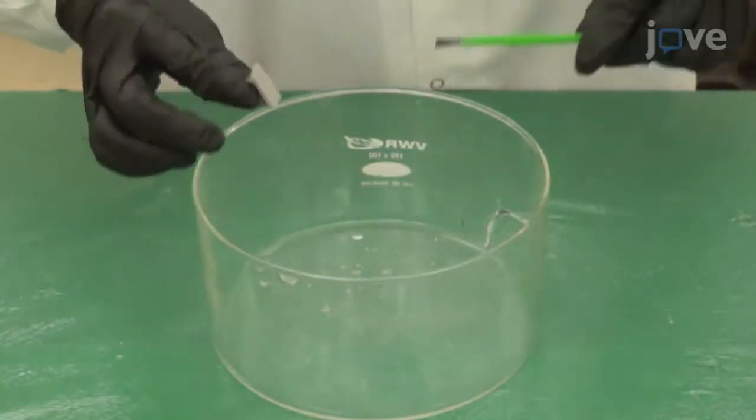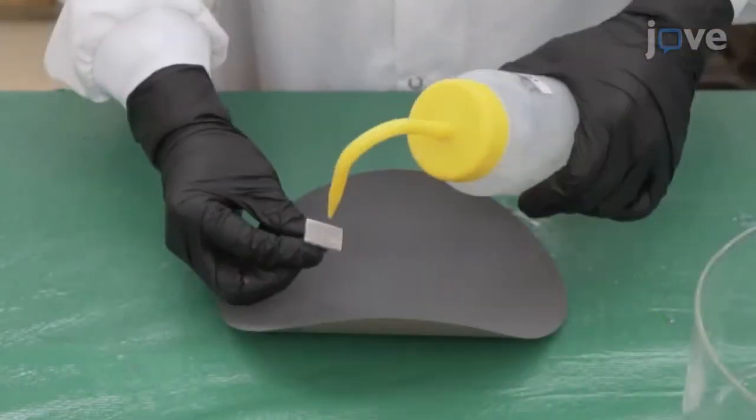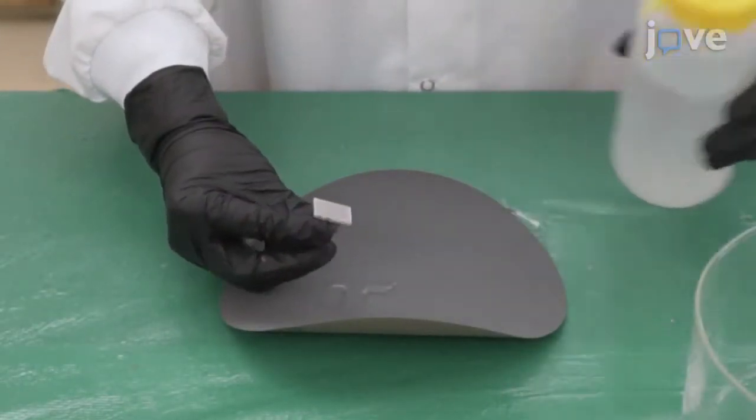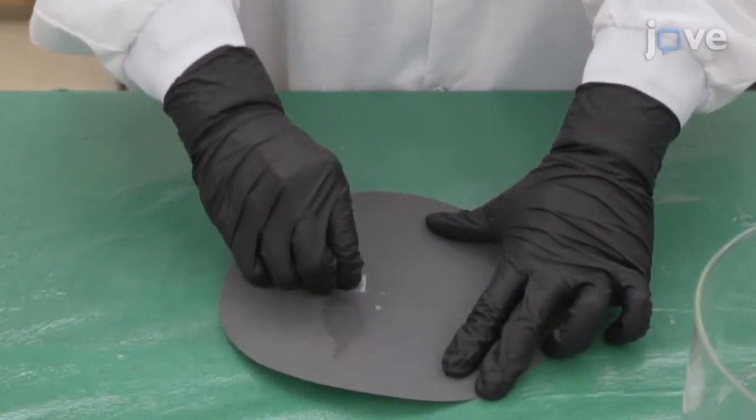Then use a soft brush and running water to clean the sample surface. Rotate and scratch the sample as just demonstrated, using 400, 600, and 1200 grain sandpapers.